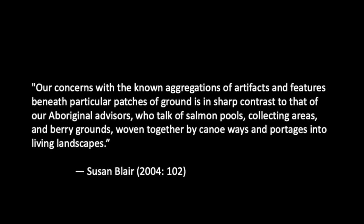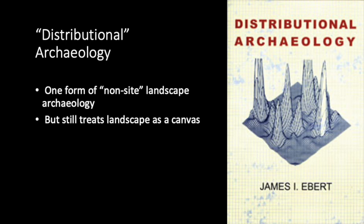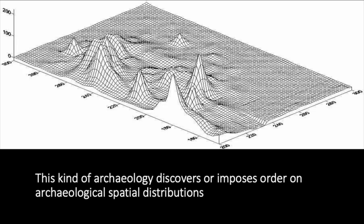Some archaeologists, notably James Ebert, have explicitly eschewed the concept of site altogether. Ebert argues for a kind of distributional archaeology that's based on the distribution of individual artifacts across the landscape. It can involve looking at variations in the densities of artifacts over space, variation in the ratio of one artifact type to another, or other kinds of statistical analyses of the artifact distributions. I expect to talk more about this type of archaeology in a later video.